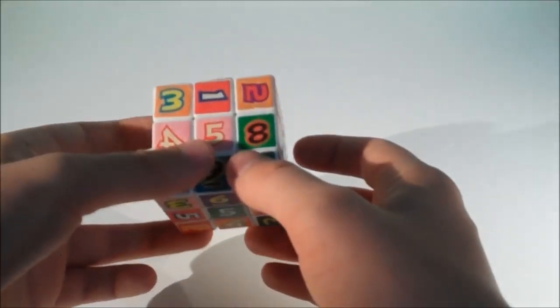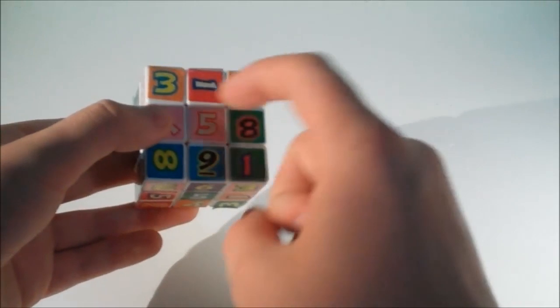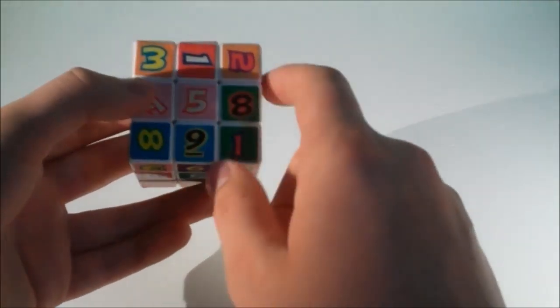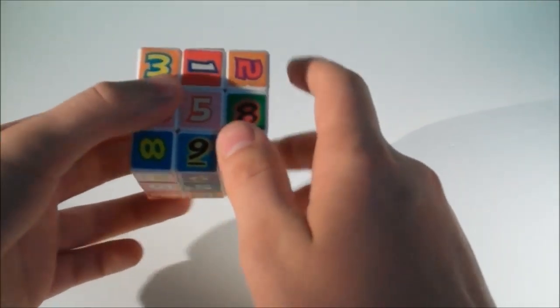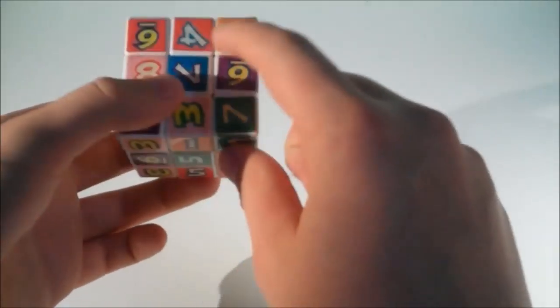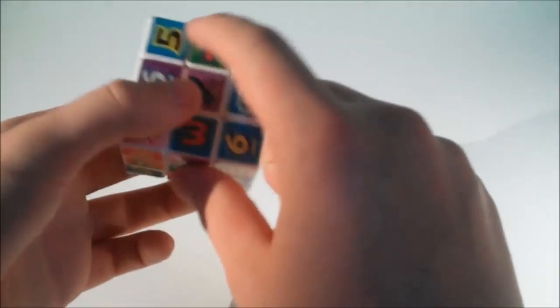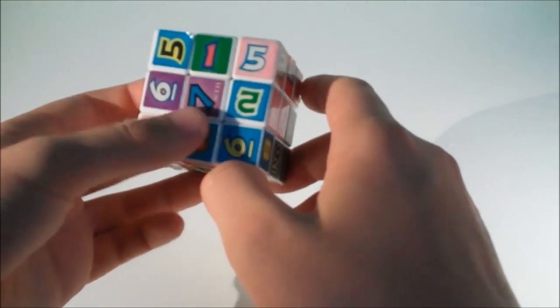Well, we need to solve it so that on each face we have only one of each number, all facing the same way. And all the way around the cube there aren't any repeated numbers in a row. So how on earth are we going to do this?